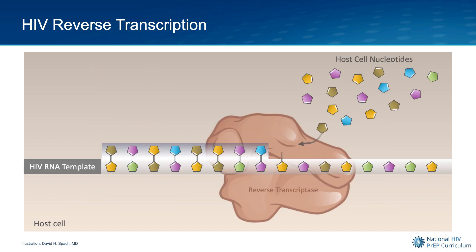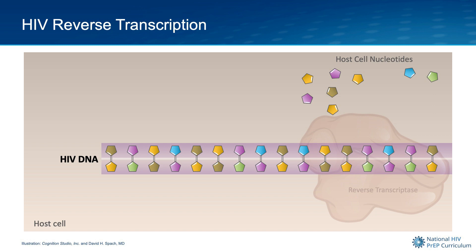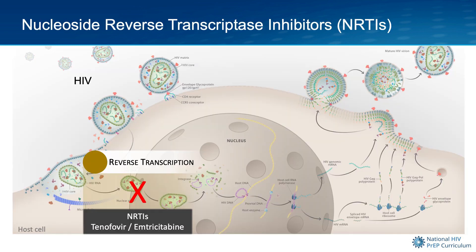The actual reverse transcription process is extremely complicated, but the basic idea is that HIV reverse transcriptase orchestrates the addition of host cell nucleotides that bind to the complementary nucleotides on the HIV RNA template strand. This process takes place with the addition of one nucleotide at a time, eventually converting the HIV RNA into HIV DNA.